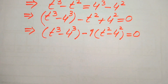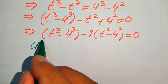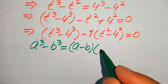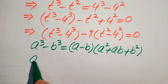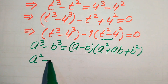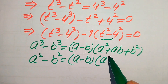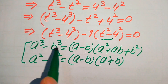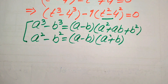In the next step we need two algebraic formulas. The first is: a cubed minus b cubed equals (a minus b)(a squared plus ab plus b squared). The second formula is: a squared minus b squared equals (a minus b)(a plus b). We need these two formulas to solve the above equation — the cubic formula for the first term and the square formula for the second term.